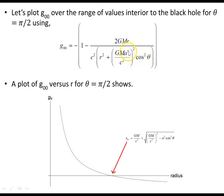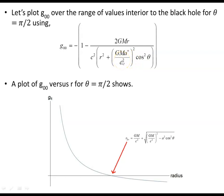A-star is the dimensionless spin parameter, and A, the spin parameter, is equal to GM/c² times A-star. So A-squared can be replaced accordingly. That's the relationship between the two.